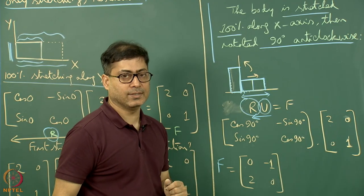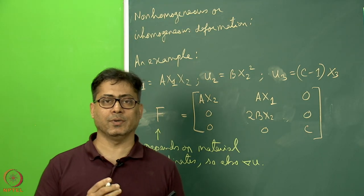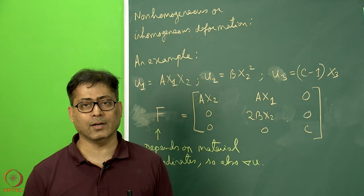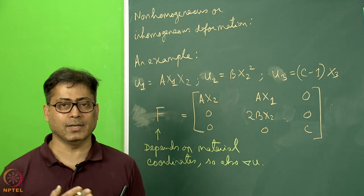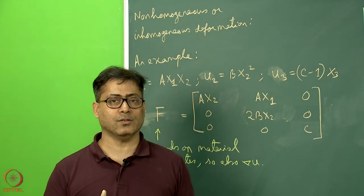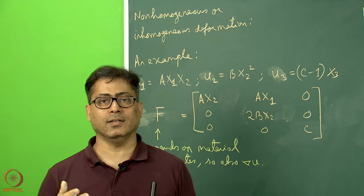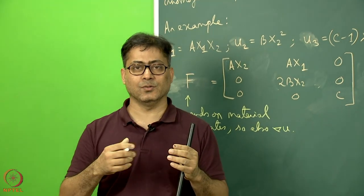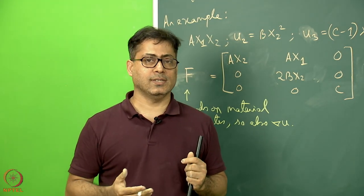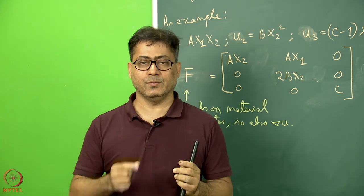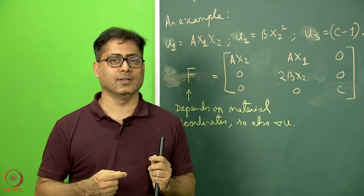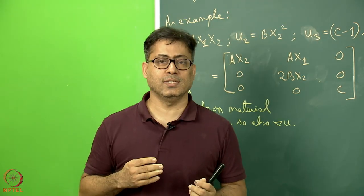In homogeneous deformation, a regular geometric object alters to another regular geometry — a rectangle deforms to a parallelogram, a square to a parallelogram, a circle becomes an ellipse, and in 3D a cube becomes a cuboid. In non-homogeneous (inhomogeneous) deformation, a regular object alters to an irregular geometry — for example a cuboid compressed into a fold. Folds are examples of non-homogeneous deformation. Geologists handle this by subdividing a wide area into very small portions, each treated as locally homogeneous.